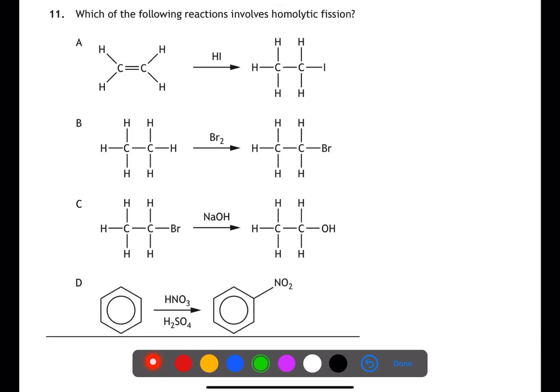For question 11 we're looking for a reaction involving homolytic fission. This means the reaction needs to involve free radicals. In A we have an addition reaction which involves ions. In B we're substituting one of the hydrogen atoms for bromine which is a free radical substitution. In C we have nucleophilic substitution and D we have electrophilic substitution involving ions.